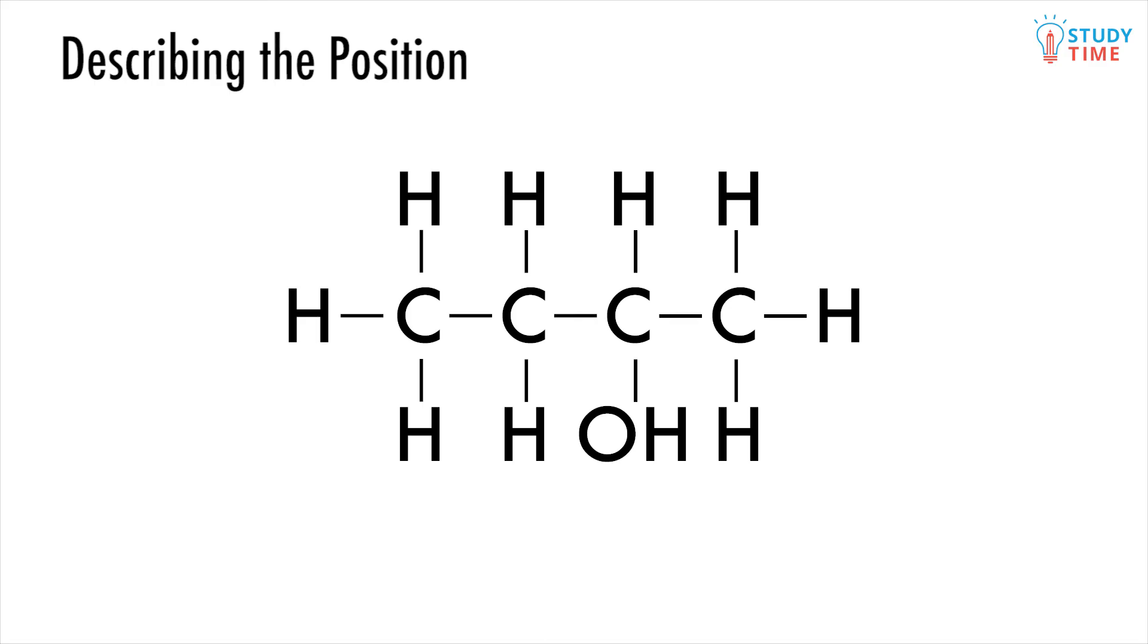But there's a catch. We want to give the smallest number possible, which means numbering the carbons from the closest side to the OH group. Let me explain. If we count the carbons from the left, we get the OH group on the third carbon down. But count from the right, and it's suddenly on the second. So which do we pick? For the sake of simplicity, we always choose the smallest number out of the two. So the OH group is on the second carbon.